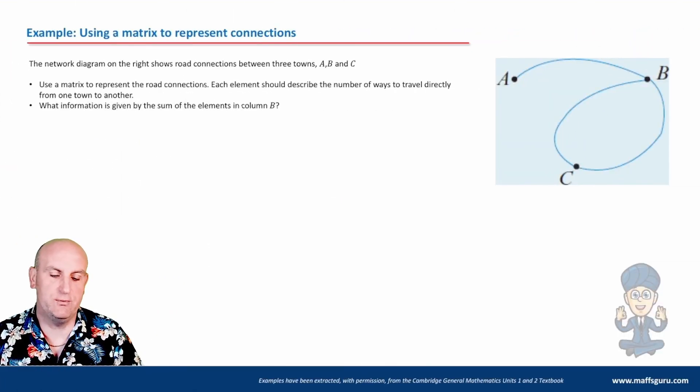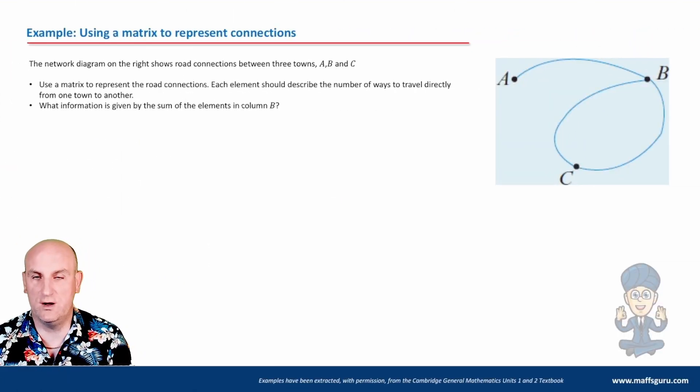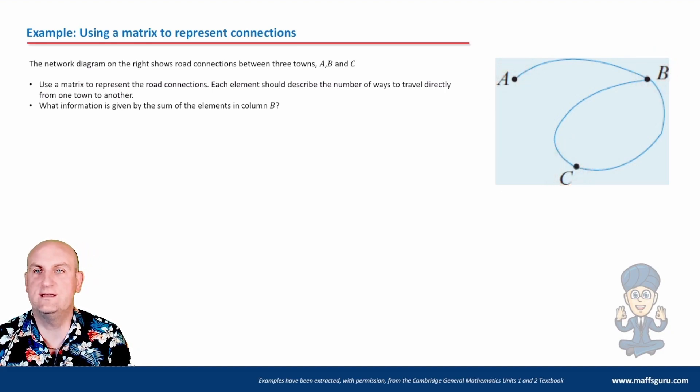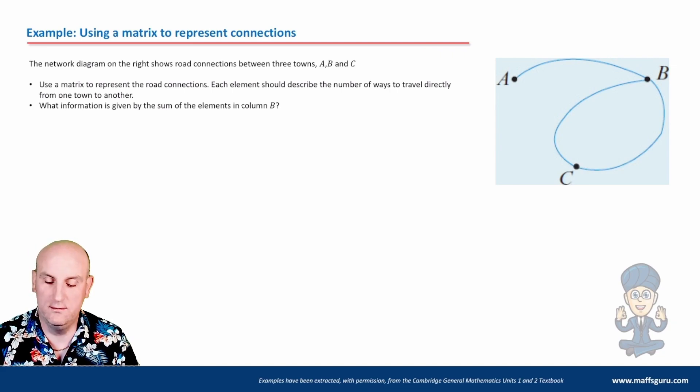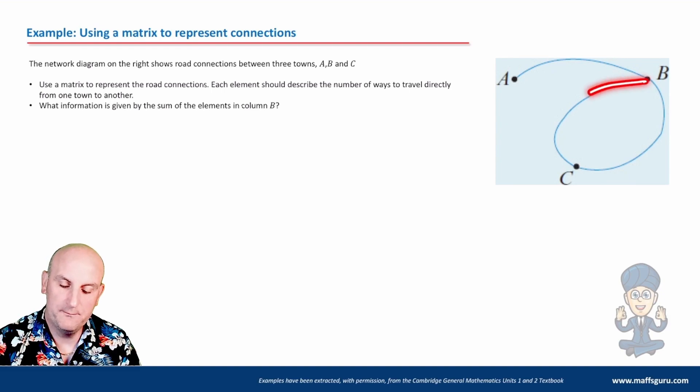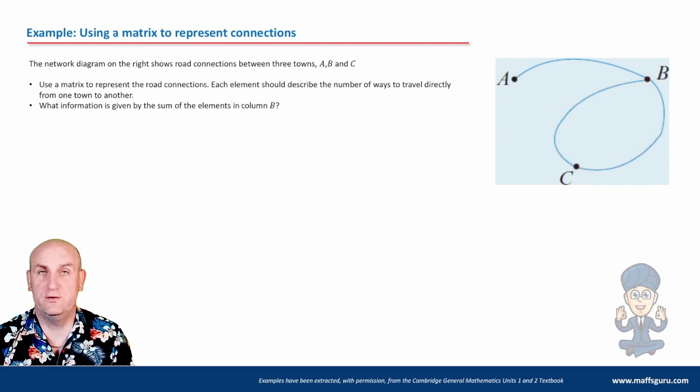So here's an example. Let's just say I live in a very small island. And I've got A, B, and C, three towns. Now there's not a huge road network, but we can say that A connects to B, and B connects to C. Now we can actually show those connections using a matrix.